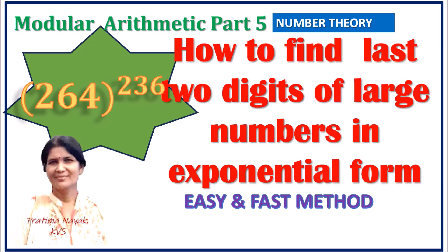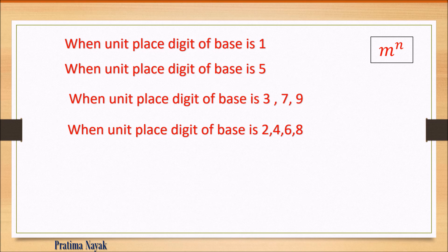Hello friends, welcome to my channel. Today we will learn modular arithmetic and number theory — how to find the last two digits of large numbers in exponent form. I have divided the whole concept into four categories. The question is given as m raised to the power n, where m is the base and n is the exponent, and we have to find the last two digits of the result.